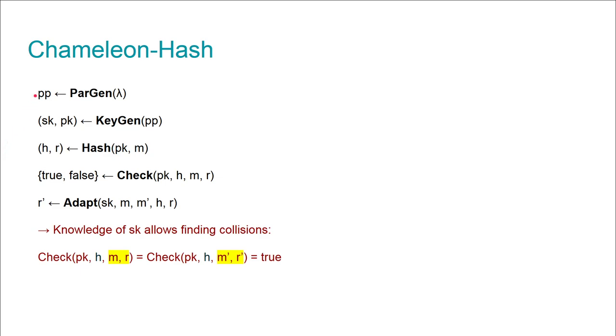I will first introduce Chameleon Hashes from a high perspective. A Chameleon Hash consists of five algorithms: a parameter generation algorithm, a key generation algorithm which outputs a key pair (secret key and public key), and a hashing algorithm.